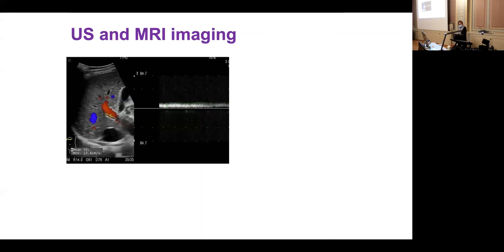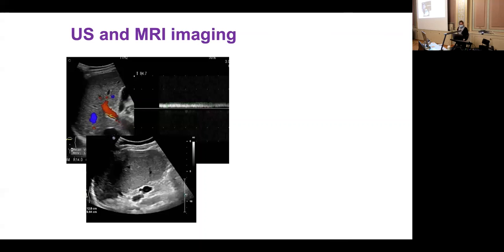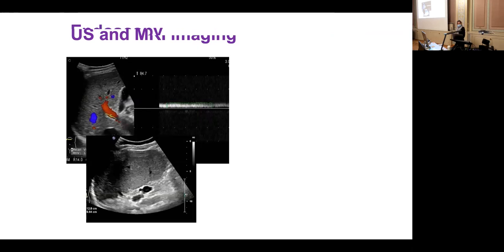An ultrasound was performed. Portal flow was lowered, less than 15 centimeters per second. The spleen of this young lady could even be felt on clinical exam — indirect signs of chronic advanced liver cirrhosis with portal hypertension.